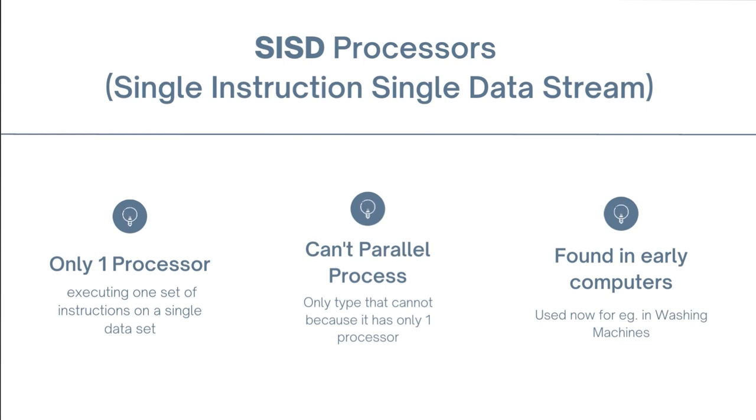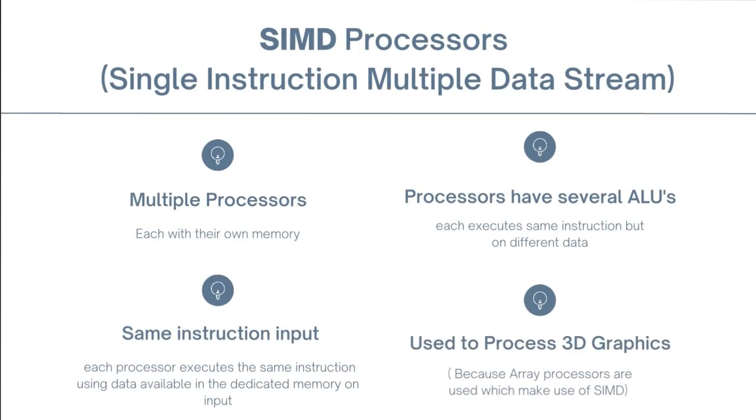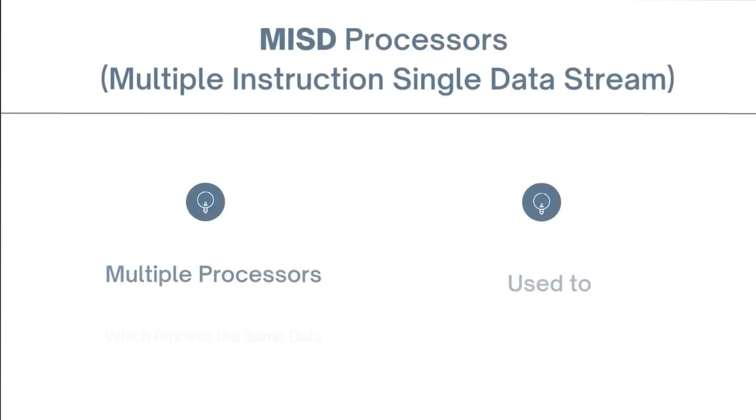Next we have SIMD, which would be single instruction multiple data stream. They have multiple processors, and every processor has several ALUs. We only have one instruction set, but there's multiple data streams. So each processor will execute the same instruction using data available in the dedicated memory on input. And they're used to process 3D graphics and such.